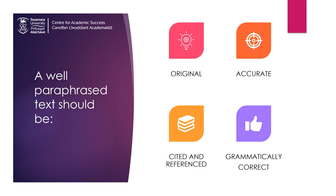A well-paraphrased text needs to have all of the following qualities. First, it needs to be original, and this means that the phrasing should be completely different from the original text. You'll use different words, different sentence structure, even different punctuation. We'll talk more about how to do this in a little while.